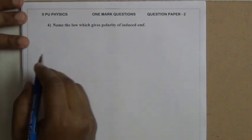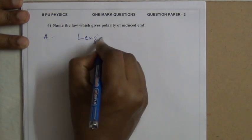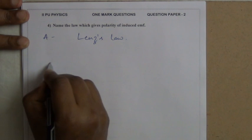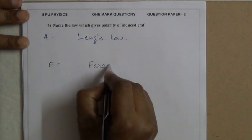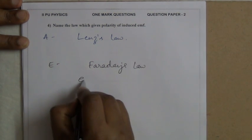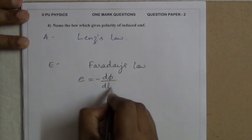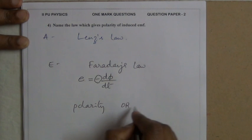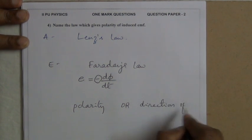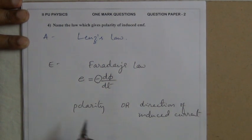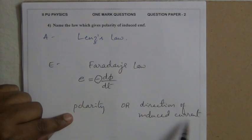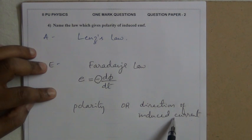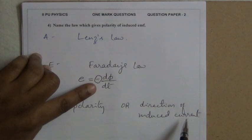Name the law which gives the polarity of induced EMF. The answer is Lenz's law. Faraday's law of electromagnetic induction states that induced EMF equals −dΦ/dt. The negative sign represents that the polarity of the induced EMF, or the direction of induced current, always opposes the cause for the induced EMF — that is Lenz's law.